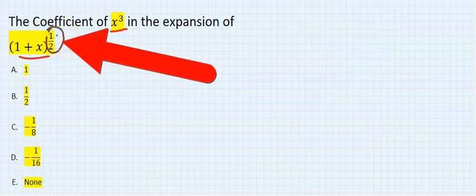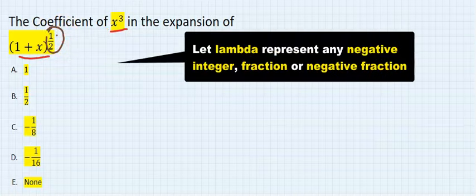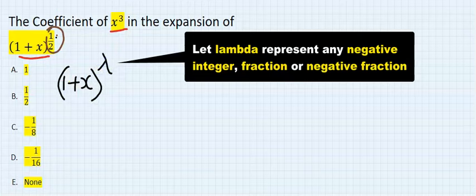Because this is half, the formula we are going to use will be, let's half be lambda. We have 1 plus x to the power of lambda. Lambda is any negative or fractional number.